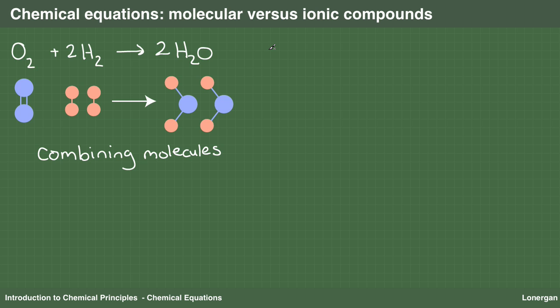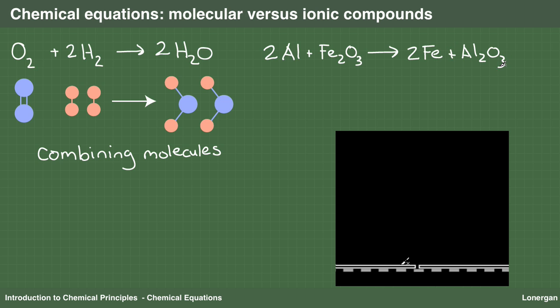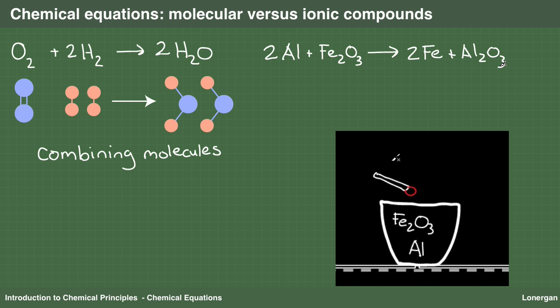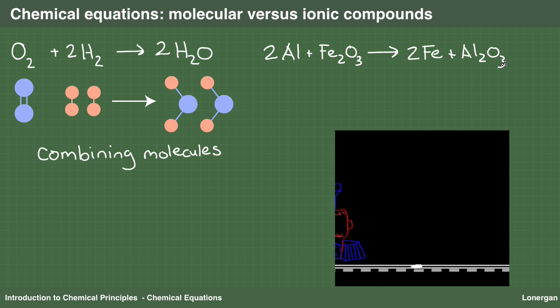Up until now, we have been talking about reactions involving molecules or covalent compounds. What do chemical equations mean with ionic compounds? The thermite reaction is one example, which is the reaction of iron oxide, Fe2O3, with aluminum to form elemental iron and aluminum oxide, Al2O3. This reaction is a mainstay of chemical demonstrations because it generates enough heat, often spectacularly so, to melt the iron product. It is also used to weld railroad tracks together.